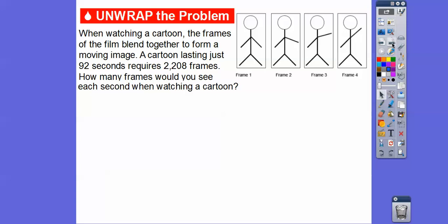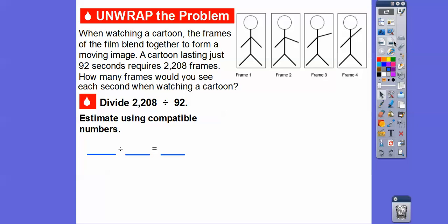When watching a cartoon, the frames of the film blend together to form a moving image. You can see this guy's arm going up, going up — so it looks like it's moving as they go together. A cartoon that lasts just 92 seconds requires 2,208 frames. How many frames would you see each second when watching a cartoon? So we're going to divide 2,208 by 92. It's always good to estimate, so let's estimate using compatible numbers.